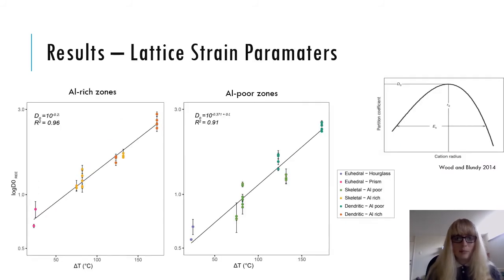Trace element partitioning behaviour in clinopyroxene can be described using the lattice strain model, which states that for a cation to enter a lattice site, work has to be done to accommodate the cation. This is shown graphically by the onuma curve, which is at the top right here, where partition coefficients are plotted against ionic radii and form a parabola. Three parameters are used to describe partitioning: the ideal radius R0 for a cation that enters the site with no work being done, E, which is the Young's modulus and describes how willing the site is in accepting cations that deviate from this ideal, and D0, which is the maximum partition coefficient of the ideal cation. So I fitted these parameters to rare earth element partitioning data extracted from the trace element maps.